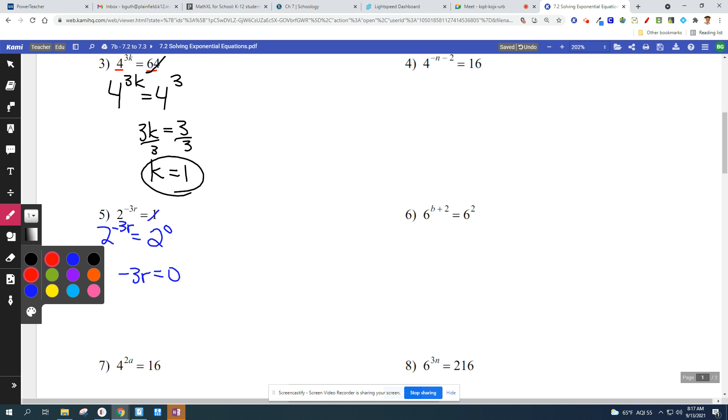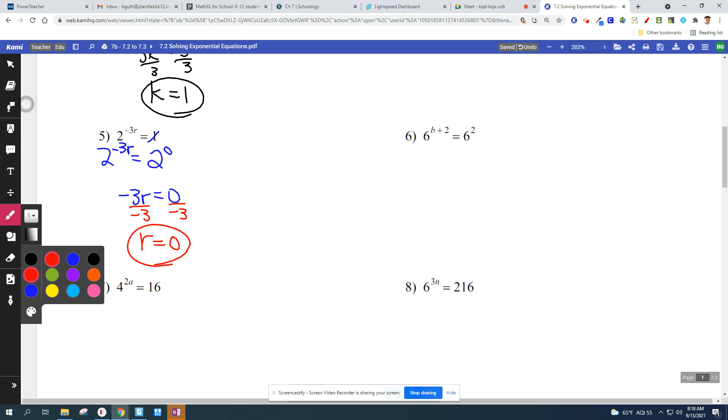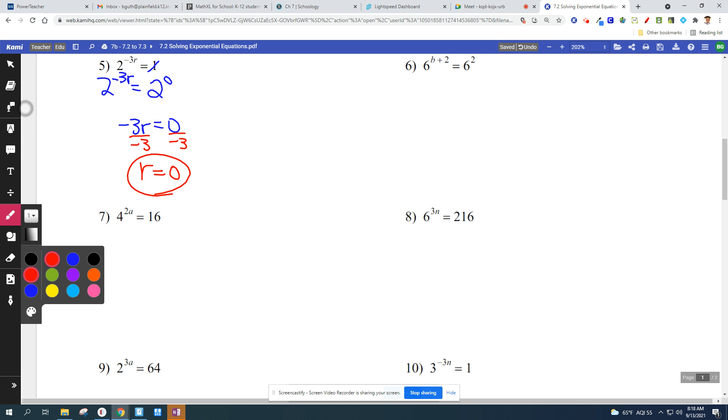Once you get that match, you're gold because all you have to do is say negative 3r equals 0. You can do that one in your head probably and skip a step. Otherwise, you're isolating the variable. So divide by negative 3, r equals 0. We're solving equations involving exponentials.